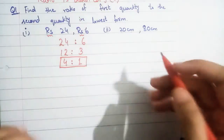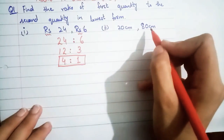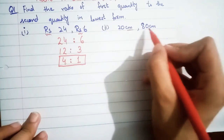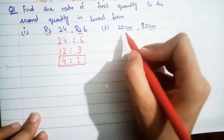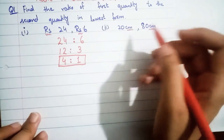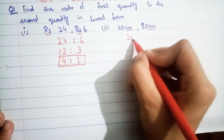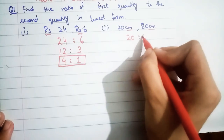The second part is 20 cm and 80 cm. The units are the same so we don't need to convert. We write 20 : 80.